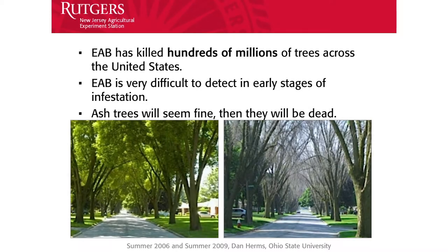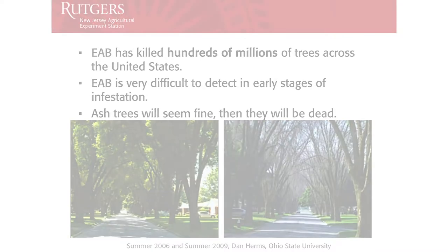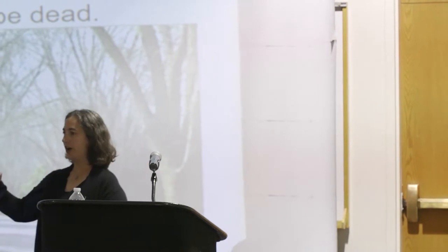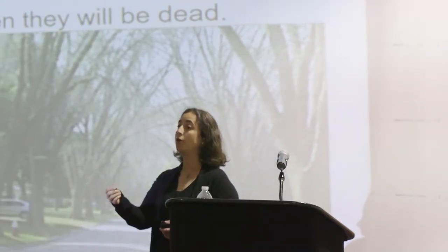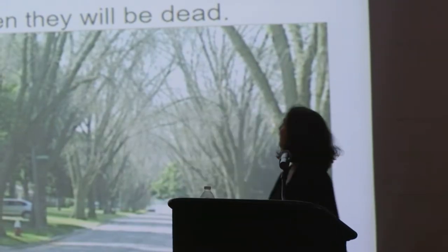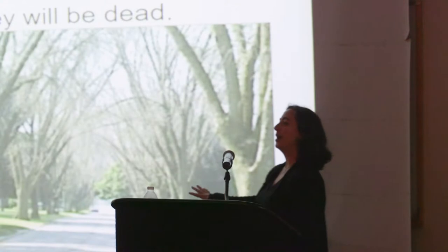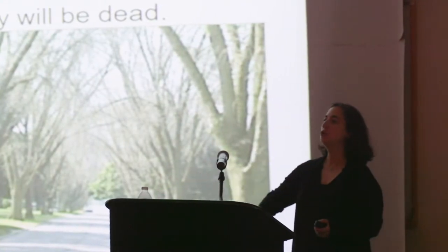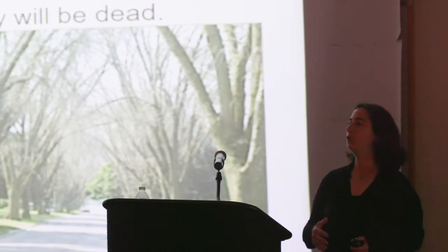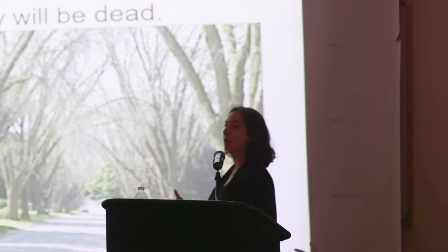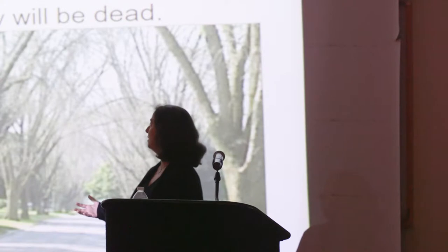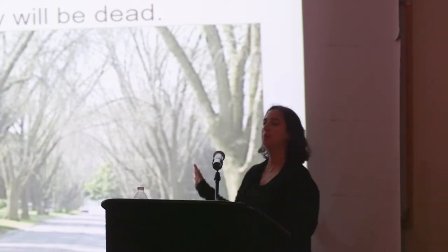Emerald ash borer is important because it has killed hundreds of millions of trees in the United States. It was originally found in the US in Michigan in 2002, and first confirmed in New Jersey in 2014. It's tricky because at first your trees will seem fine. For many years ash trees can look fine while building up populations of emerald ash borer larvae underneath the bark. Your ash trees can seem fine for years and then all of a sudden be too far affected to be treated. So it's really important to address this insect early, even before the tree is showing any symptoms.